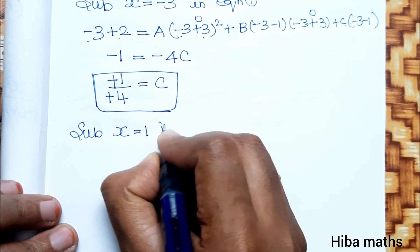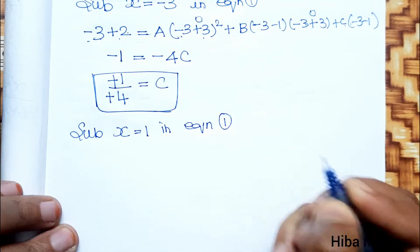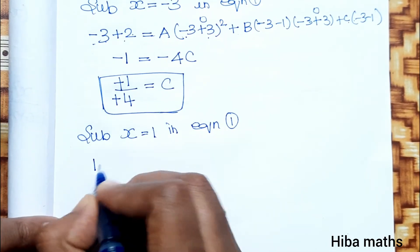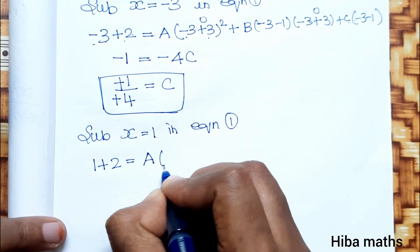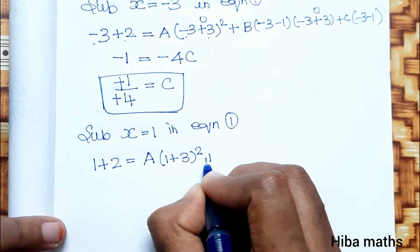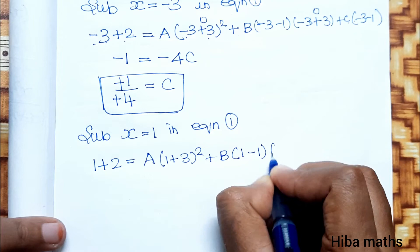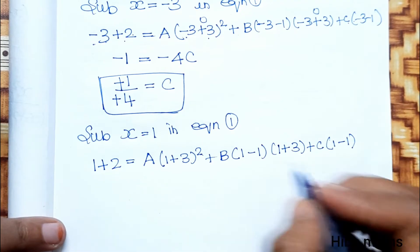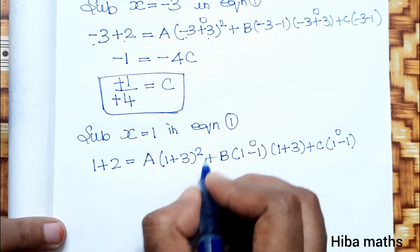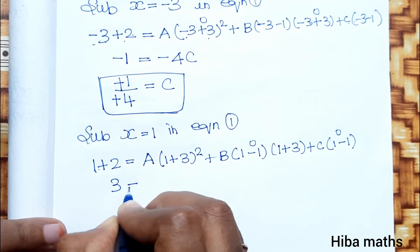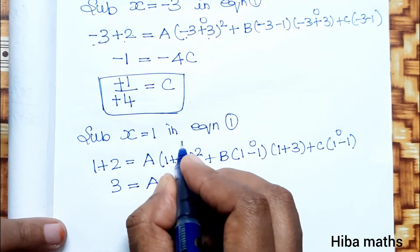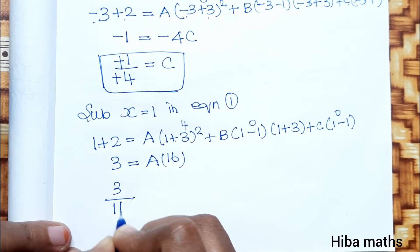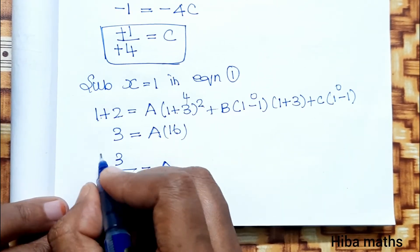Next, to find A, substitute x equals 1 into equation 1. We get: 1 plus 2 equals A into 1 plus 3 whole square. That is 3 equals A into 4 squared, which is 16. So A is equal to 3 by 16.